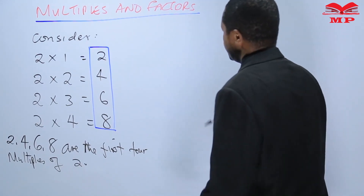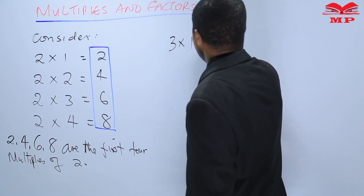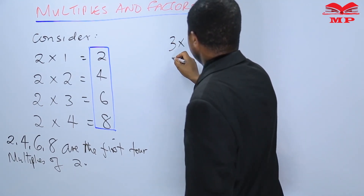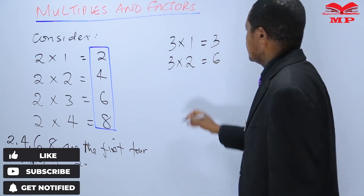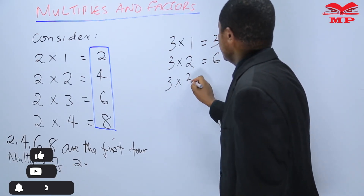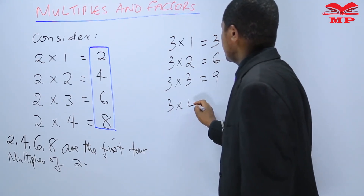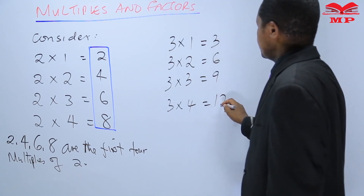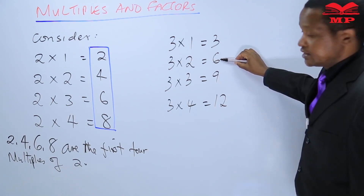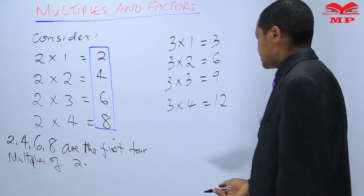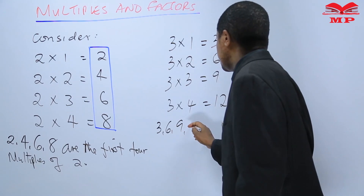Consider the following: three times one is equal to three, then three times two is equal to six, three times three will give us nine, and lastly three times four is equal to twelve. Now these — three, six, nine, and twelve — we can write them here: three, six, nine, and twelve.